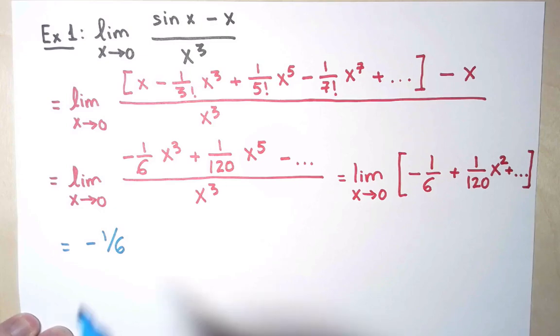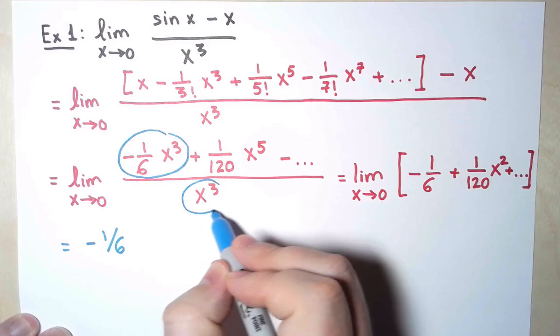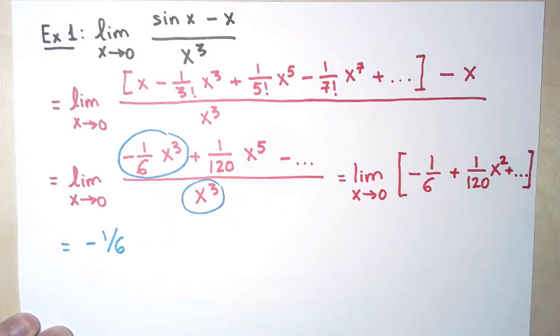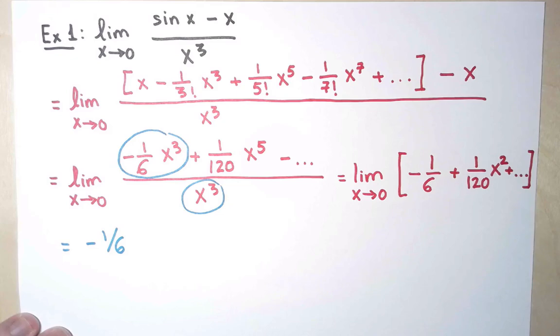And just like in the example before, I can notice that the only term that really mattered was the first term, the first non-zero term, the term with the smallest exponent that has a non-zero coefficient. Everything else was irrelevant for the purpose of the limit.